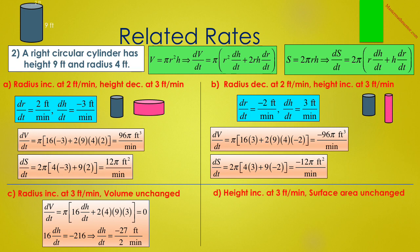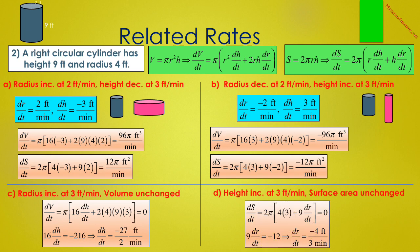In D, the height is increasing at 3 feet per minute, but the surface area at that moment in time is unchanged. We would like to find out how fast the radius is changing. Using our dS/dt formula with everything but dR/dt known: dS/dt equals 2π times the quantity 4 times 3 plus 9 dR/dt, and since the surface area is unchanged we set that equal to 0. That gives 9 dR/dt equals negative 12, and therefore dR/dt equals negative 4/3 feet per minute. So if the height is increasing at 3 feet per minute, the radius must be decreasing at 4/3 feet per minute for the surface area to be unchanged.